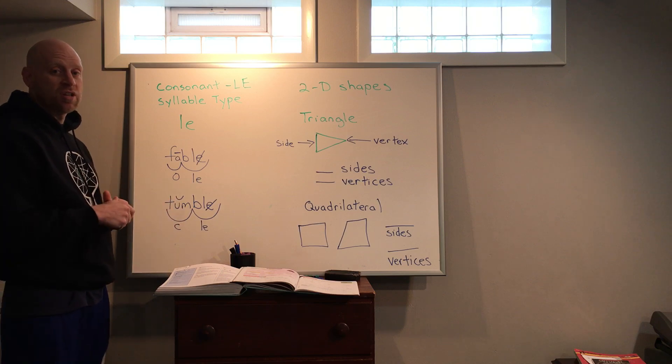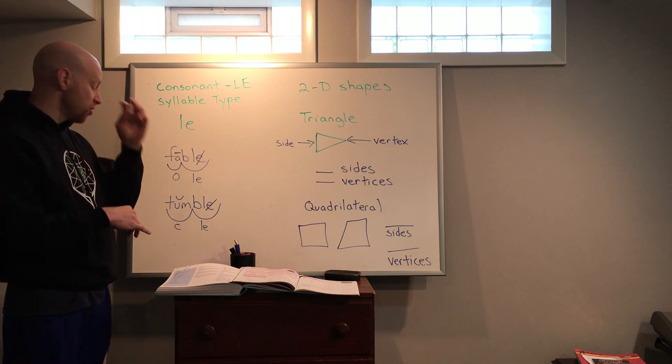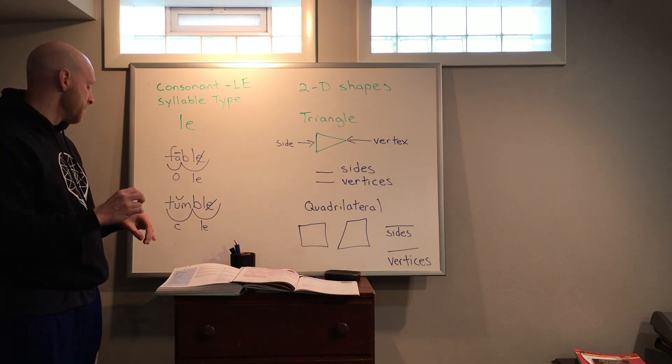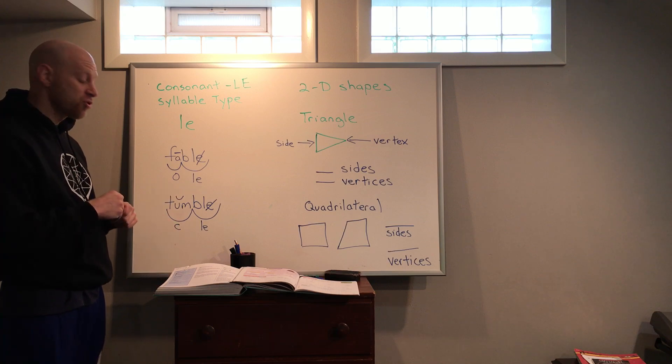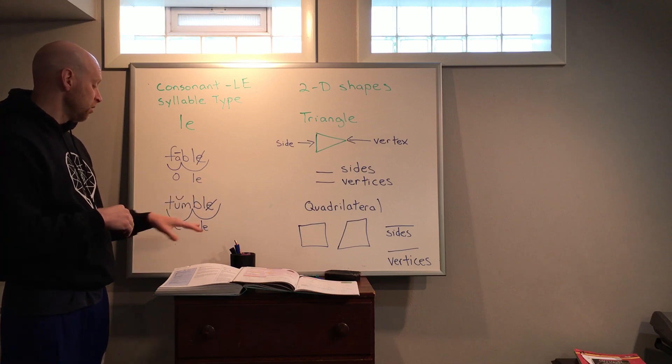And the same with tumble, which is kind of like a word like fall down. So tumble, we know we're gonna have at least two vowels in there. A short U, we give it a breve, it's a closed syllable which is why we hear that short U.